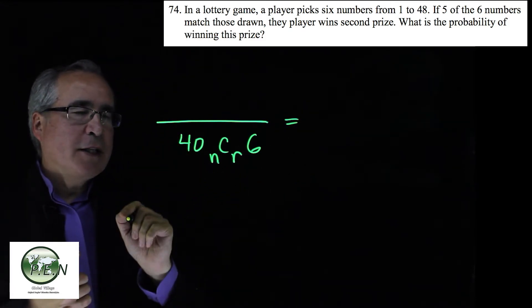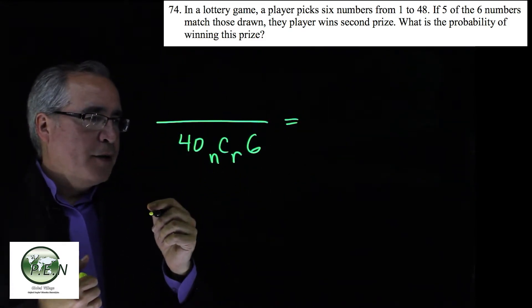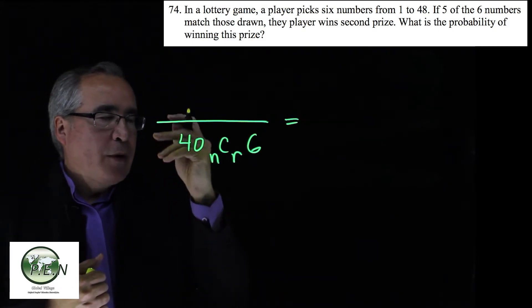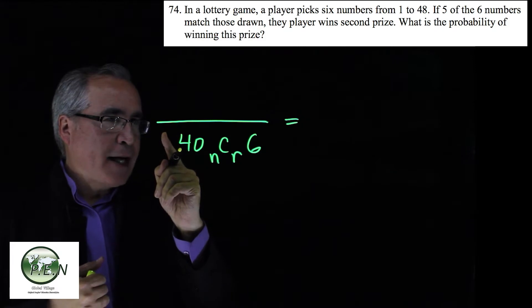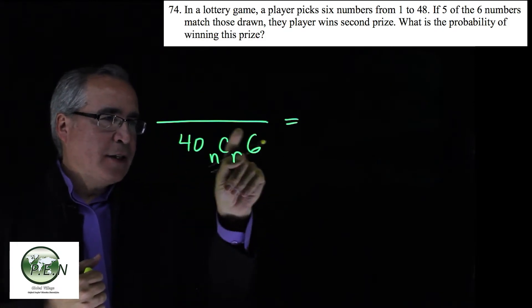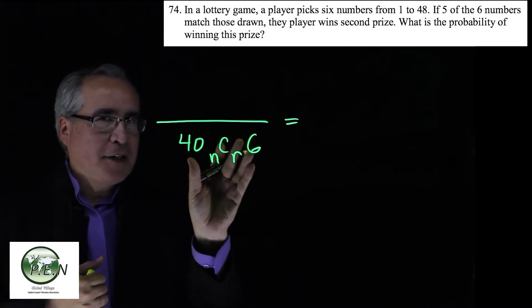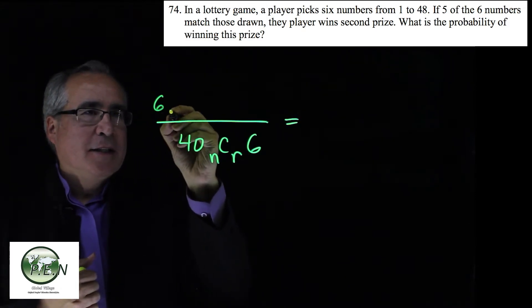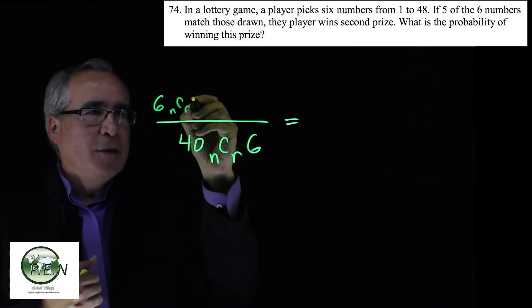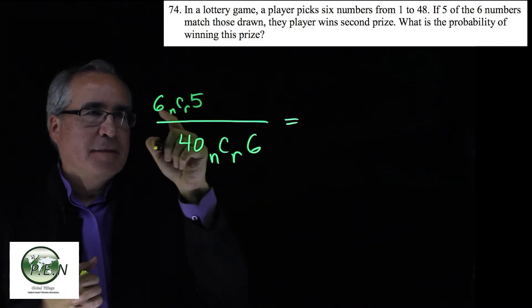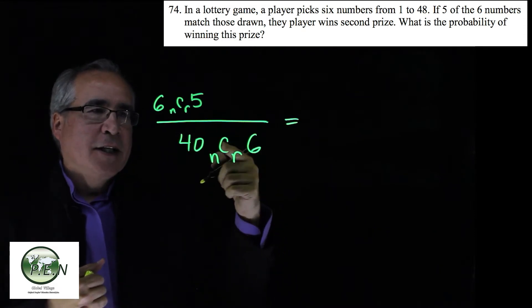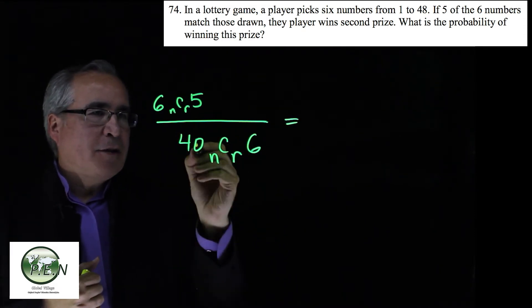What we want to happen is of those, we want to match exactly five. So of these six that came out, of the six winning numbers, we want to match five of them. We got to match five of those six and not match the leftover.